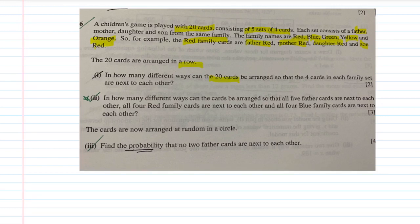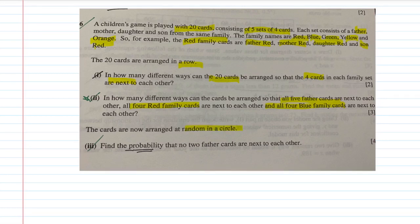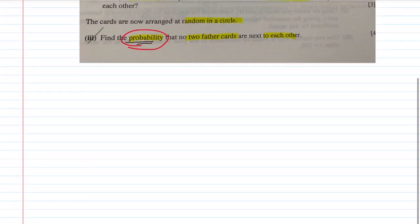In how many different ways can the 20 cards be arranged so that the four cards in each family set are next to each other? Part two: in how many ways can they be arranged so that all five fathers' cards are next to each other, all four red family cards are next to each other, and all four blue family cards are next to each other? We'll need to draw this out. The last part involves cards arranged at random in a circle — find the probability that no two father cards are next to each other.